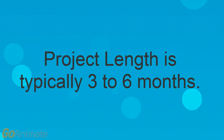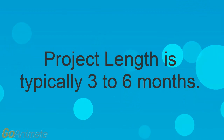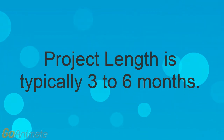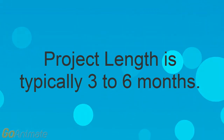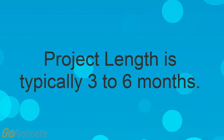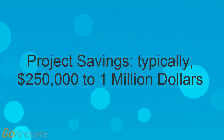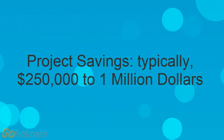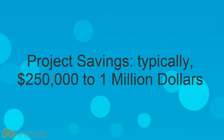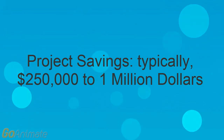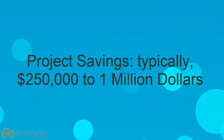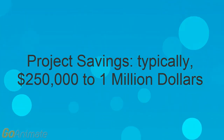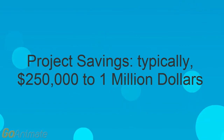If the project is less than one month, consider performing a Kaizen event, often referred to as a Mini DMAIC. Project savings can fluctuate from company to company; however, typical Lean Six Sigma projects deliver a cost savings of $250,000 to $1 million.